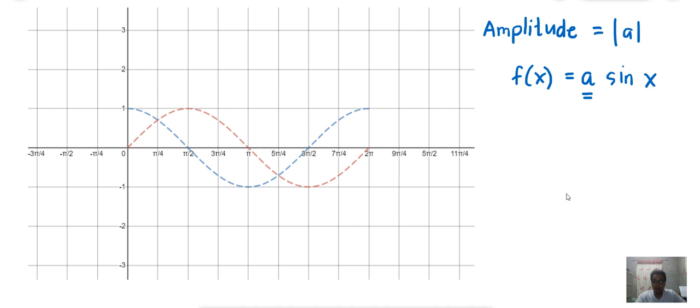This means the height of our wave, of our sine wave or cosine wave, will change if there is a presence of a constant multiplied to our function. So, let us take, for example, f(x). F(x) equals 3 sine x.